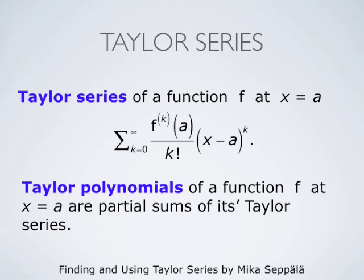The Taylor series of a function f at x equals a has the form: summation k from 0 to infinity of the k-th derivative of f evaluated at a, divided by k factorial, times (x minus a) to the power k. The special case where a equals 0 is called a Maclaurin series. Taylor polynomials of f centered at a are partial sums of its Taylor series at that point. In practical computations, we always use Taylor polynomials instead of series, since Taylor polynomials are finite objects and easier to compute with.